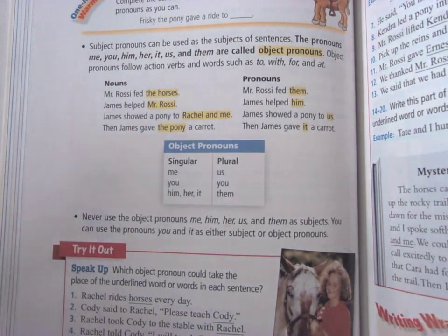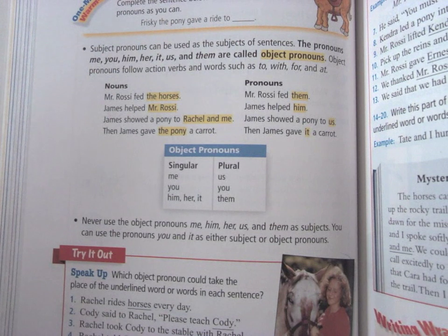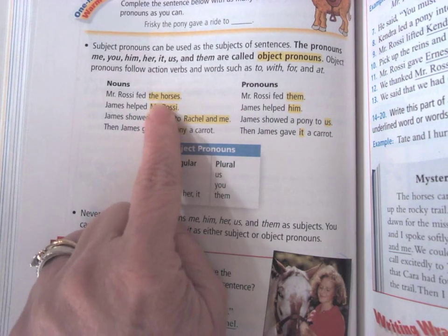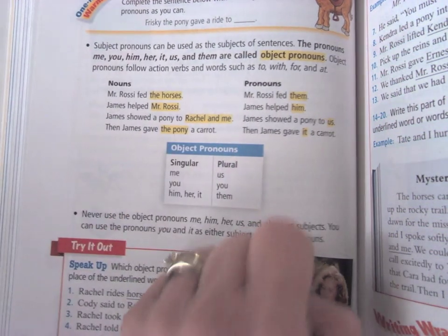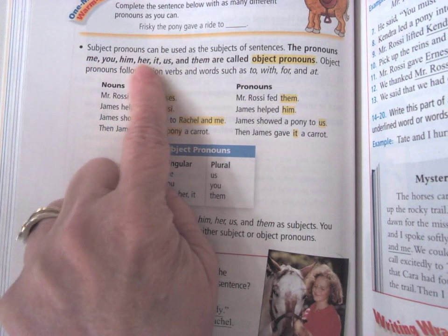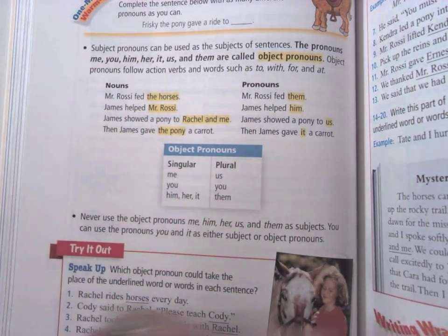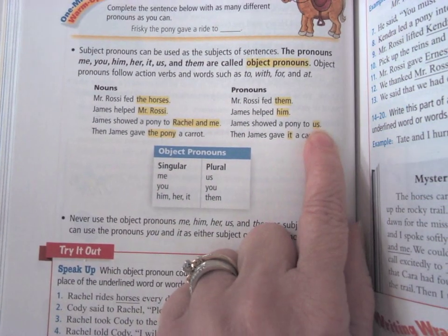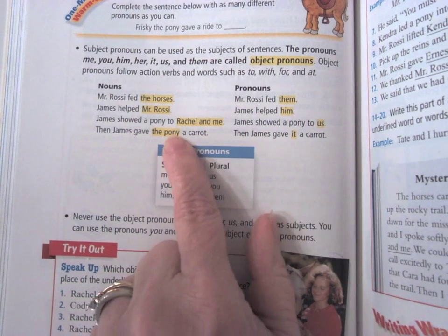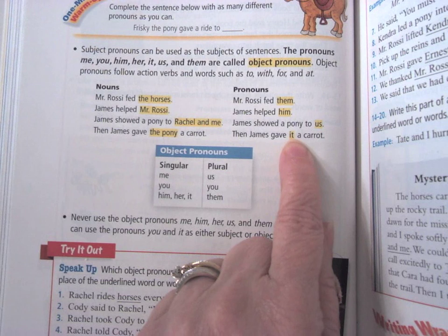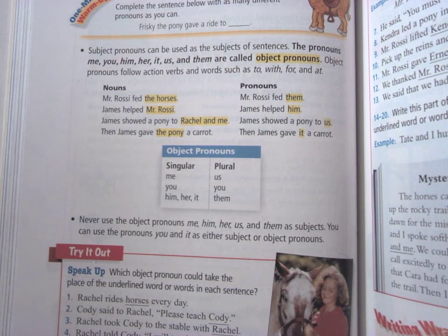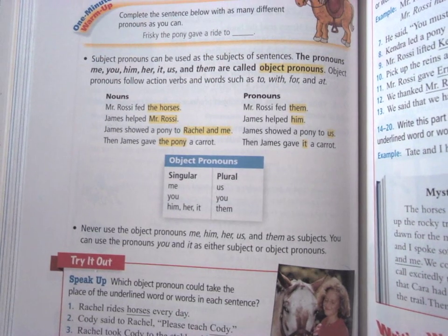Object pronouns are pronouns that can be used following the action verb. So when you look at these — action verb fed, action verb helped, showed, gave — the highlighted parts are after the verb. In that case, we're using words like me, you, him, her, it, us, and them — a little bit different than the subject pronouns. Mr. Rossi fed them. James helped him. James showed the pony to Rachel and me. He showed it to us. Then James gave the pony a carrot — it. Animals are considered 'it.' We don't say he or she; we say it.